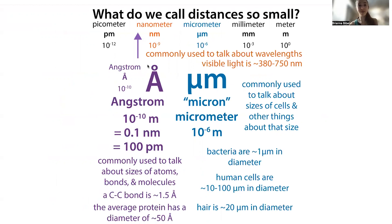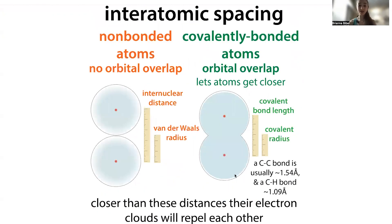The angstrom is 0.1 nanometers or 100 picometers. We use this size because it's really convenient for talking about the sizes of atoms, bonds, and molecules. A typical carbon-carbon bond is about 1.5 angstrom, and a carbon-hydrogen bond is about 1.09 angstrom. If we talked about these in nanometers, we'd say 0.154 or 0.109 — it's a lot easier to talk in terms of angstroms as long as we all know what an angstrom is.